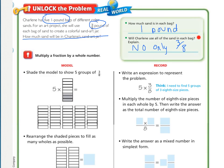Will Charlene use all of the sand in each bag? No. That's where the 3/8 comes in. So our sentence is going to end up being 5 times 3/8. Now, this is a model part, and this is the record part.